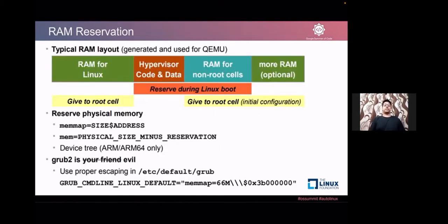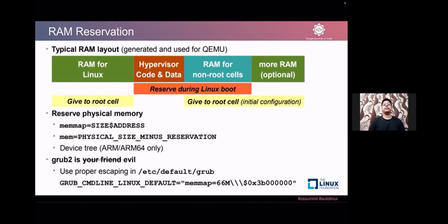The RAM reservation part specifies how much RAM the configuration file should allocate. The memory layout includes: RAM for the Linux root cell, RAM for the hypervisor code and data, and RAM for non-root cells — all pre-mentioned because Jailhouse is a static partitioning hypervisor. For x86 systems, we use memmap with size and dollar-address; for ARM systems, we use physical size minus the reservation; extra device trees can be added for ARM boards. For GRUB2, you need to escape the dollar sign with backslashes when adding command-line options.